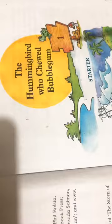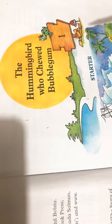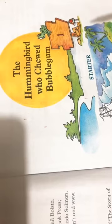This chapter, The Hummingbird Who Chewed Bubble Gum, is about a child who told about a bird who needed help building a nest.